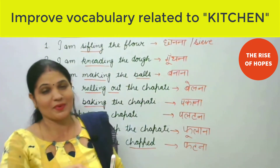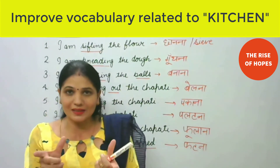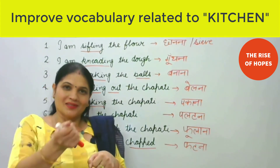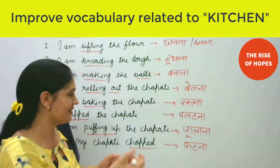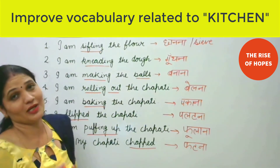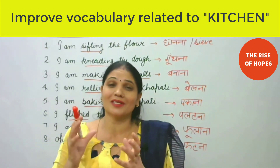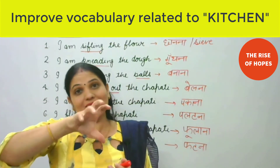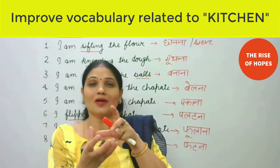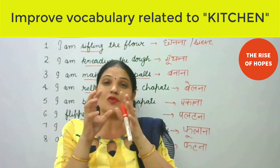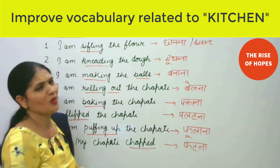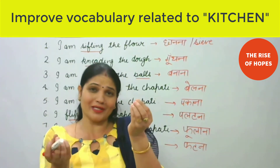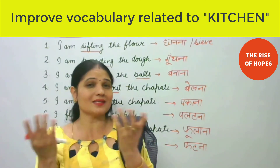Next, I am puffing up the chapati. Uske baad, palatne ke baad, use ko phulate hain — phool aana hota hai puffing. I am puffing the chapati. Uske baad, sometimes it happens — ki jo seekhne waale hain, jaise mere jaison ko toh hamesha kabhi nahi aati — ki jab chapati ban jaati hai, phul jaati hai, woh phoot jaati hai. Joh uski hawa woh nikal jaati hai. Toh woh jo phoota hona hota hai, usko hum kya kahenge? Chapped. Oh my chapati, chapped. Meri roti phoot gayi — woh aise beech se crack us mein aa gaya. That is chapped.